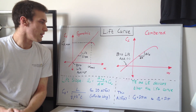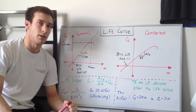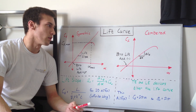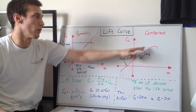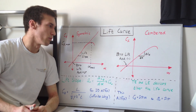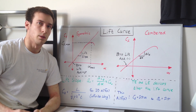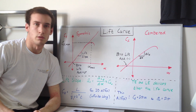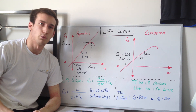One last thing: trailing edge and leading edge devices such as slats and flaps alter the lift curve — they'll shift it and change where stall occurs — and I'll go through those in more detail in subsequent videos. So that's a basic intro on the lift curve, lift coefficient, and lift slope. Thanks for watching.